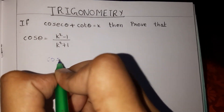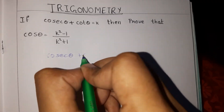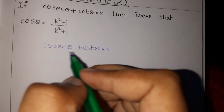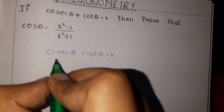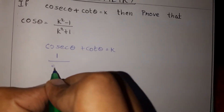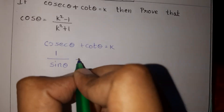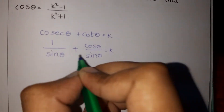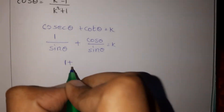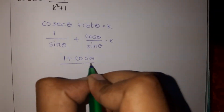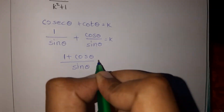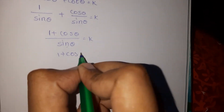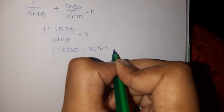First, we are given that cosecant theta plus cos theta is equal to k. We rewrite cosecant theta as 1 by sin theta. So we have 1 by sin theta plus cos theta by sin theta is equal to k, which gives 1 plus cos theta by sin theta is equal to k.